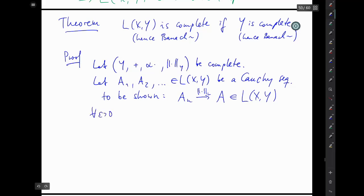Remember, it means for every epsilon greater than zero there exists N_0 in the natural numbers such that for all M and N greater than or equal to N_0, the norm of A_M minus A_N in this L norm, the usual operator norm, is less than epsilon.